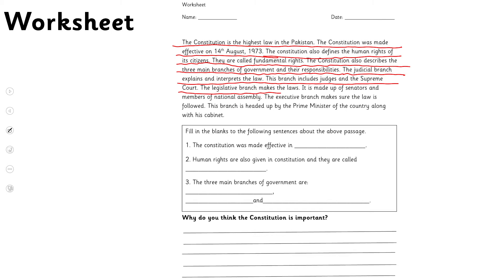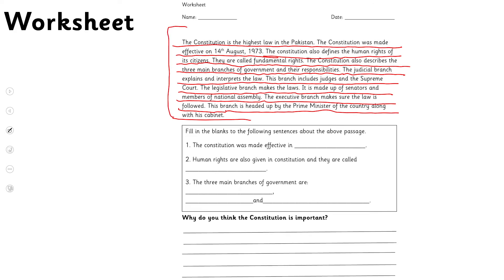The judicial branch explains and interprets the law — this branch includes judges and the Supreme Court. The legislative branch makes the laws — it is made up of senators and members of the National Assembly. The executive branch makes sure the law is followed — this branch is headed by the Prime Minister along with his cabinet.